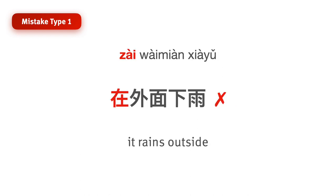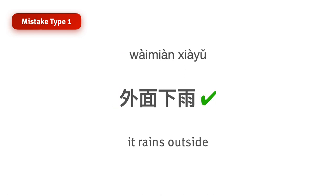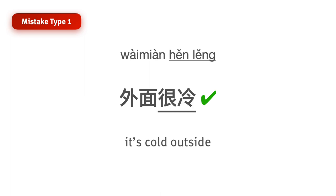Another example: instead of saying 在外面下雨, we should simply say 外面下雨 — 'It rains outside.' The reason is the word 下雨 acts more like an adjective here. For example, we can substitute it with 外面很冷, meaning 'It's cold outside,' or 外面刮风, meaning 'It's windy outside.'